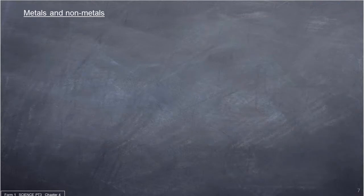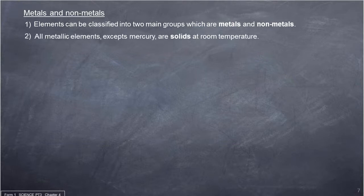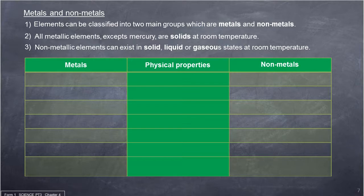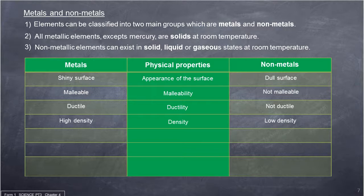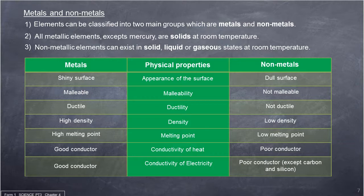Elements can be classified into two main groups: metals and non-metals. All metallic elements, except mercury, are solids at room temperature. Non-metallic elements can exist in solid, liquid or gaseous states at room temperature. The differences between metals and non-metals: metals have a shiny surface while non-metals are dull. Metals are malleable while non-metals are not. Metals are ductile while non-metals are not. Metals have high density and high melting points while non-metals have low density and low melting points. Metals are good conductors of heat and electricity, while non-metals, except carbon and silicon, are poor conductors.